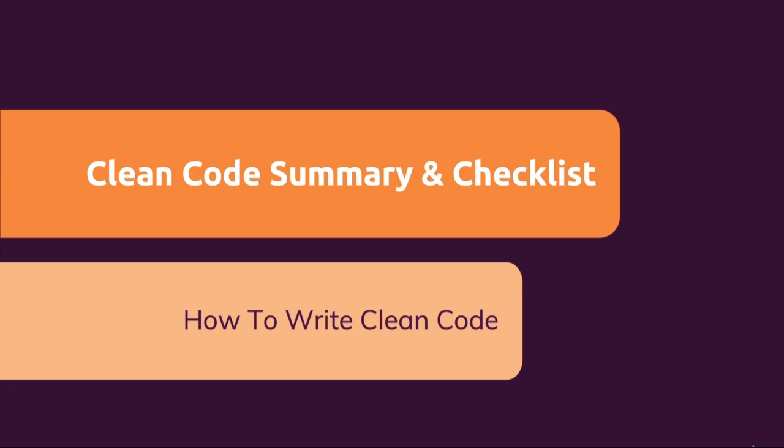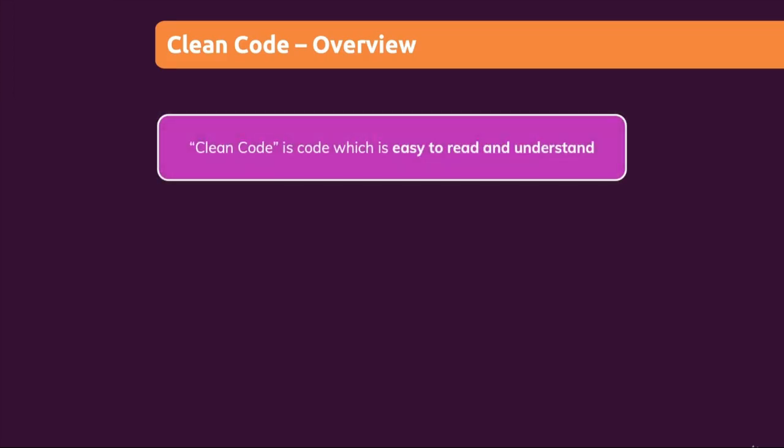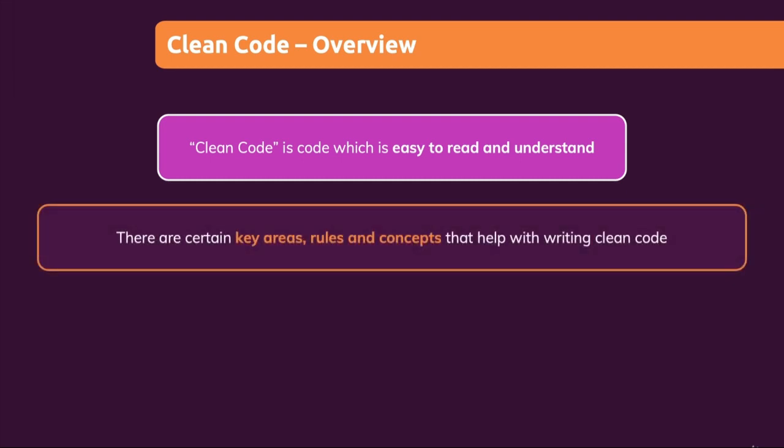Because the most important rule which you always should keep in mind is that when we talk about clean code, we talk about code which is easy to read and understand — by humans. This matters. We're not talking about the computer understanding your code. It should be easy to read and understand for humans. And if your code is easy to read and understand, then it's clean. There are certain key rules and concepts which you can follow to achieve that clean code.